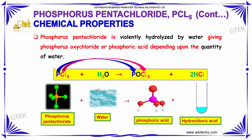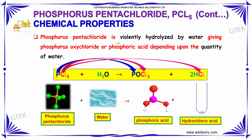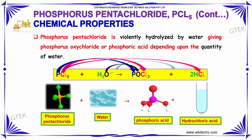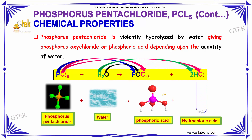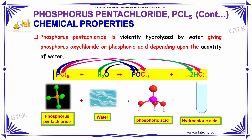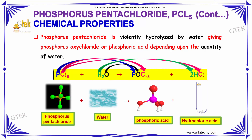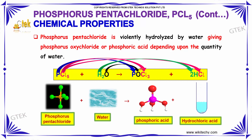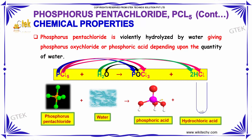When mixed with water, phosphorus pentachloride is violently hydrolyzed, giving phosphorus oxychloride and hydrochloric acid. Under excess water, it may further give phosphoric acid.